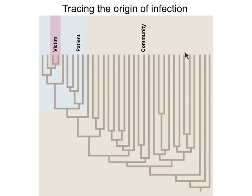No other member in the community shares ancestry with the strain in this victim. So you can see how phylogenies help us reconstruct evolutionary history at large scales of time, but they can also help us understand the transmission of viruses or bacteria with high mutation rates at a very short scale of time.